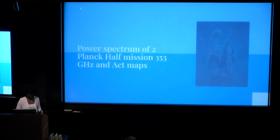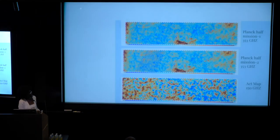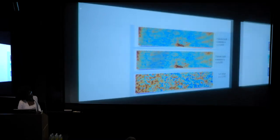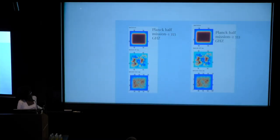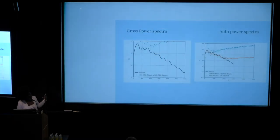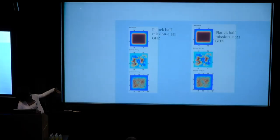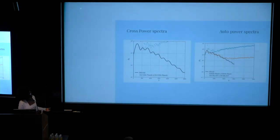So I'm going to be showing you three different parts of our methods. The first one is a power spectrum of two Planck half-mission maps at 350 gigahertz, and one ACT map at 150 gigahertz. And then we apodize the maps, which is a picture of how the apodization looks like. And then we got the cross power spectrum and the auto power spectrum.